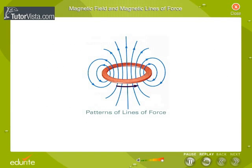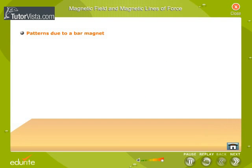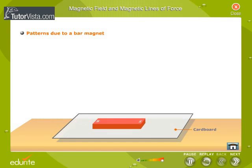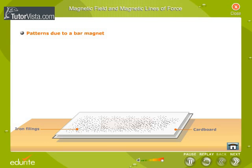Patterns of Lines of Force. Patterns due to a bar magnet. Let us now study the nature of magnetic lines of force due to a bar magnet. Place a bar magnet on the cardboard. Sprinkle some iron filings on a piece of paper and place it on the magnet. Tap the paper gently. The iron filings arrange themselves as shown here.